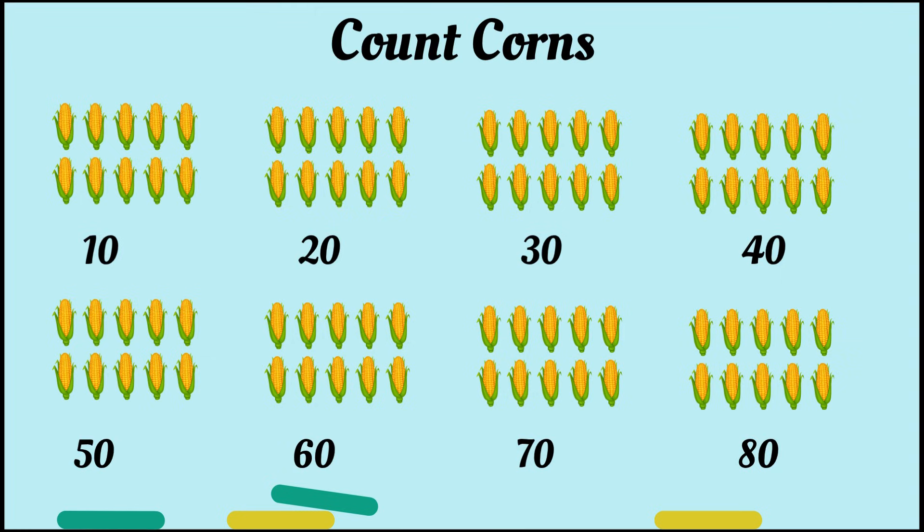As you can see, in 1 group, there's 10. And all together, there are 8 groups of 10. You can either do 10 times 8, or you can skip count by 10s and stop at the 8th number.